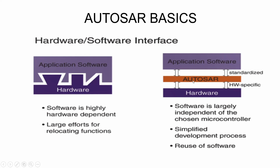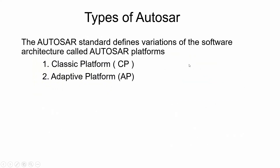AutoSAR looks to address those deficiencies by providing a clearly defined layer of abstraction between the hardware, providing a common software foundation irrespective of the chosen microcontroller. In the traditional method, application software is tightly coupled with the hardware, so software is highly hardware dependent, and changes to the application software take larger effort. But with the help of AutoSAR, application software is independent from the hardware, which simplifies the development process and allows reuse of application software between ECUs connected in the same network. If you want to understand more about AutoSAR basics, I have mentioned my AutoSAR Basics video in the description — please watch it.